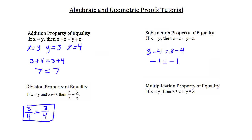The multiplication property of equality works the same way. Using the same x, y, and z: x times z — 3 times 4 — must equal y times z, also 3 times 4, since x and y are equal. So 12 equals 12 — equal, as they should be.